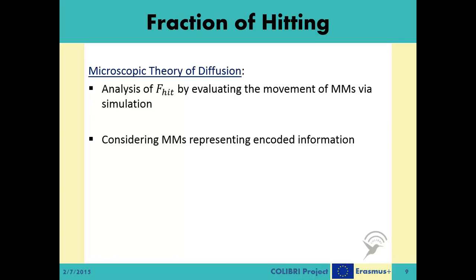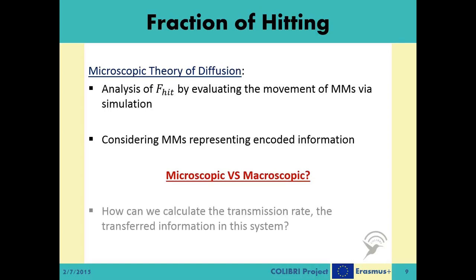Remember that we mentioned the macroscopic theory of diffusion, which deals with more generalized closed-form solutions for the same hitting properties. In a simple scenario like we described in this video, it is easy for the macroscopic theory to come up with closed-form solutions. However, when the scenario gets more complicated and especially when the geometrical symmetry of the environment is lost, the mathematical evaluation becomes much harder. Therefore, in more realistic scenarios, it is much easier to use the microscopic theory to evaluate the hitting probabilities. After obtaining these f-hit values, the next question becomes what is the transmission rate in this system and how can we calculate it?